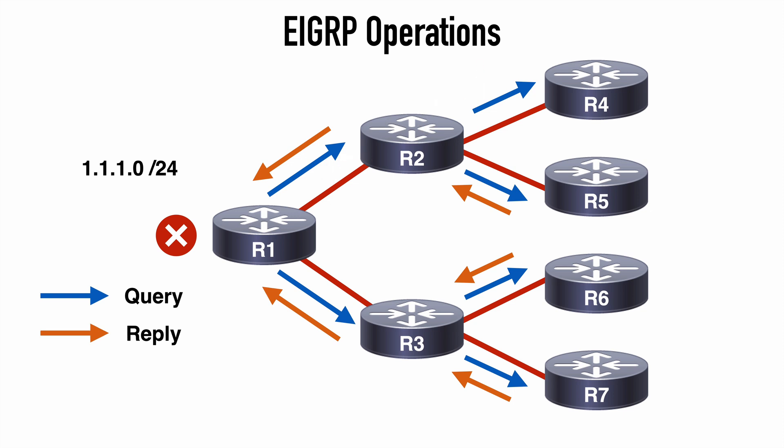Let's say for some reason R4 wasn't able to get a reply back to R1 within this timer window. R1 would drop the neighbor adjacency it has with R2 and place the route in the stuck-in-active state, meaning we would lose all of the routes learned from R2 as well. Lots of things can cause this, such as network congestion or a very large network. A mechanism introduced in IOS 12.15 and later to help avoid these unintentional termination events is the active process enhancement feature, which introduced two new EIGRP packet types called SIA query and SIA reply. These are discussed in the 1.3a EIGRP video covering EIGRP adjacencies.